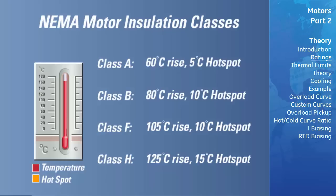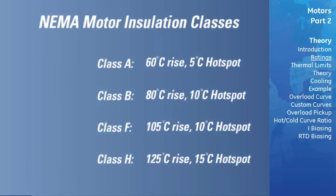In the past, class F insulation was typically called for in most industrial applications. But with the ever-increasing use of variable speed AC drives and the associated heating due to harmonics, class H insulation is now more commonly specified.